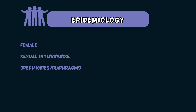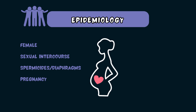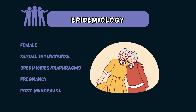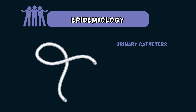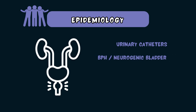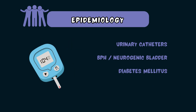Spermicides can disrupt the normal vaginal flora, and diaphragms can trap bacteria near the urethra. In pregnancy, hormonal and physical changes can cause urinary stasis and bladder compression, which can increase the risk of UTIs. Postmenopausal women have decreased estrogen, which leads to thinning of the urogenital mucosa and a reduction in protective vaginal flora. Urinary catheters can provide a direct path for bacteria to enter the bladder and are a very common cause of UTIs in hospital settings. Conditions such as benign prostatic hyperplasia and neurogenic bladder can result in incomplete bladder emptying, allowing residual urine to provide a medium for bacteria to grow. Diabetes mellitus causes immune suppression and nerve damage to the bladder; in addition, high glucose in the urine can support bacterial growth, all of which can lead to more frequent UTIs.